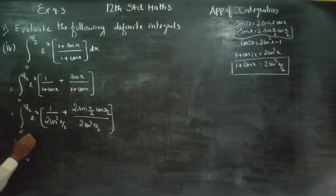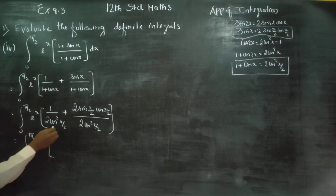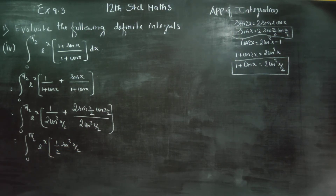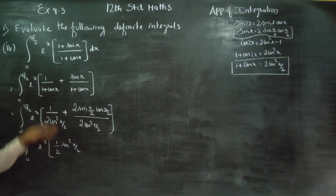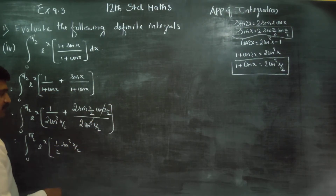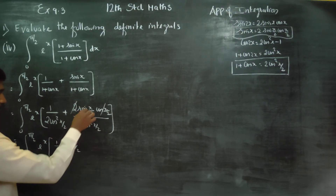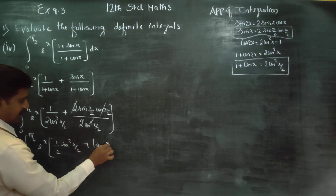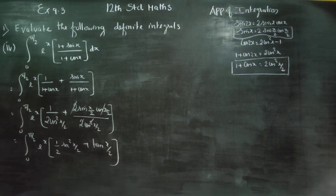So, integration from 0 to π/2 of e^x. The term 1/(1 + cosx) becomes 1/(2cos²(x/2)), which equals (1/2)sec²(x/2). And sinx/(1 + cosx) becomes 2sin(x/2)cos(x/2) divided by 2cos²(x/2), where the 2s cancel, giving sin/cos = tan(x/2).